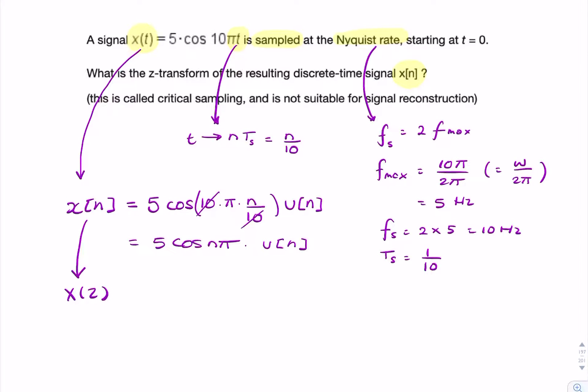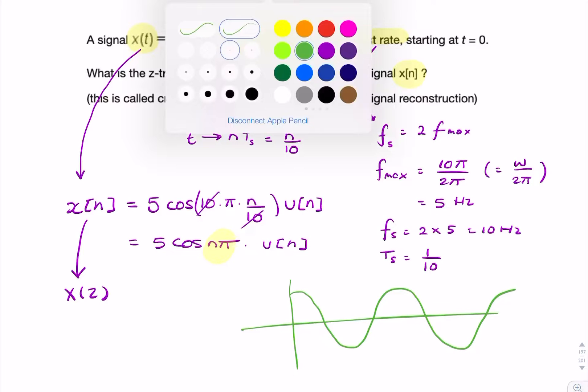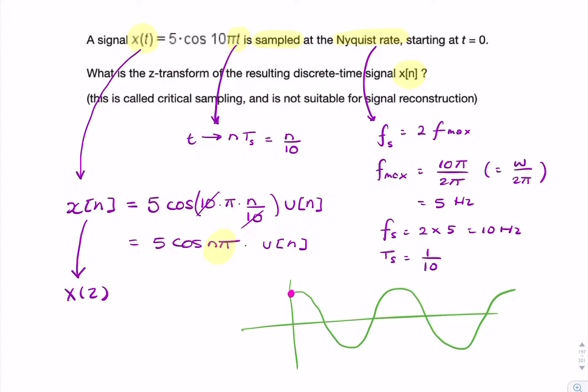Now, cos(nπ), that means we're only taking integer multiples of π. So if you think of that as a cosine wave that is critically sampled, it means we're taking values at integer multiples of π, so every π radians. So that will be 5, and that will be minus 5.